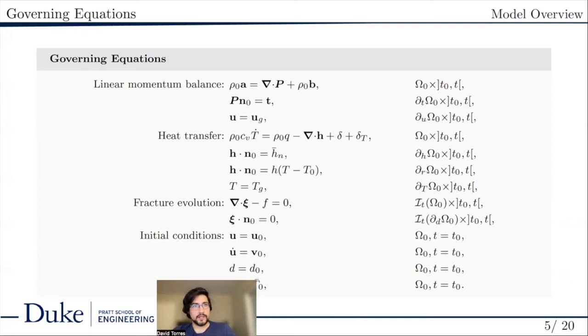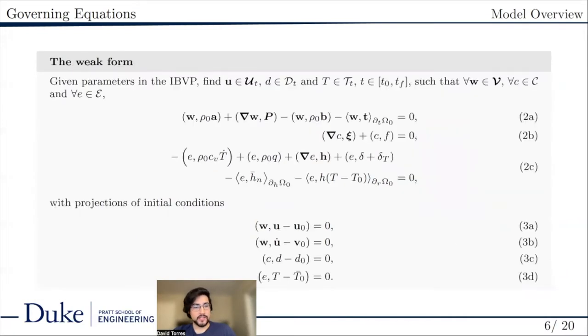Of note are the delta and delta t terms, which provide heat generation due to plastic deformation and will be described in more detail later. From that strong form, we recover the following weak form.